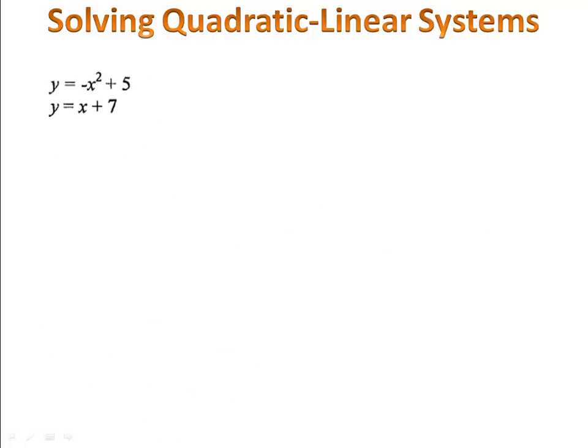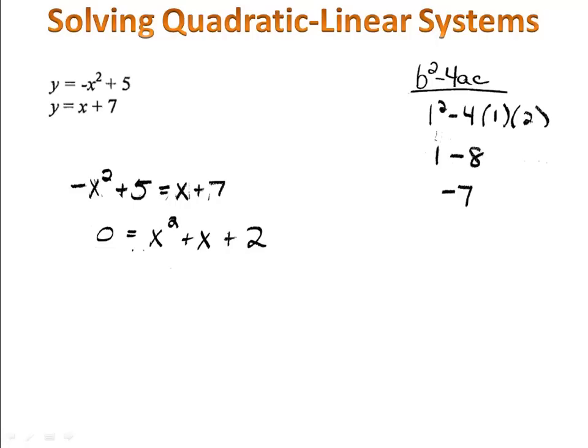In our final example, I'd like to show you what happens when we have no solution. We begin by making sure both equations are in the form y equals, and then we write our equation. We get everything to one side and try to factor, but we realize it doesn't factor. We try the quadratic formula and notice that b² - 4ac, the number under the square root, is -7.